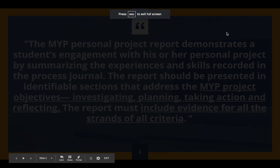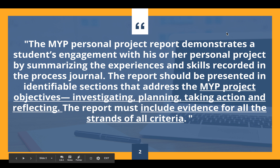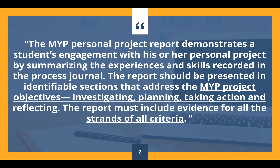The report — this is the description from the IB — the main thing you'll recognise is that it covers those four objectives: investigating, planning, taking action, and reflecting. That's actually how your project report will be laid out. Throughout the year when we've been meeting with our supervisors, we've been discussing these things, so it's going to be super easy to write about. The things we've done in advisory and the process journal checklist link to each of these objectives, so you'll have more than enough evidence.